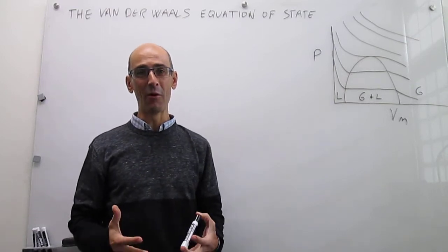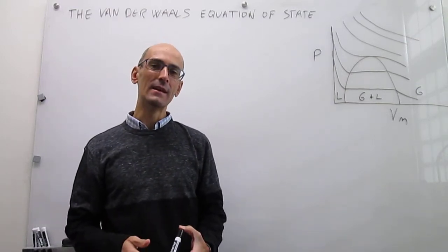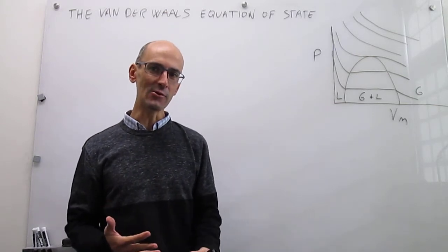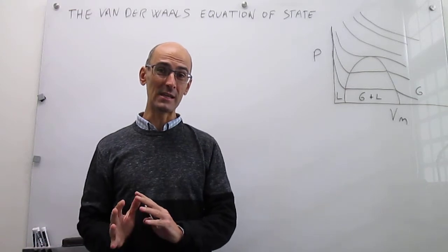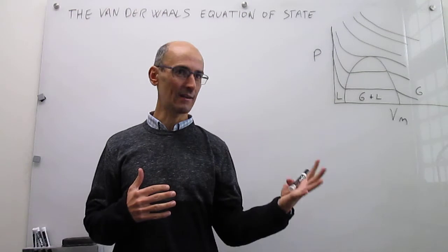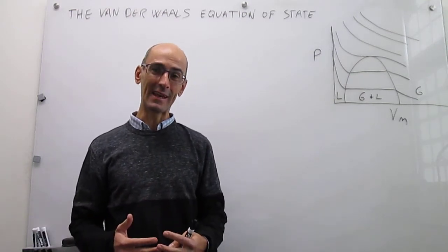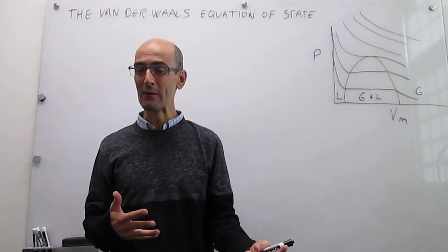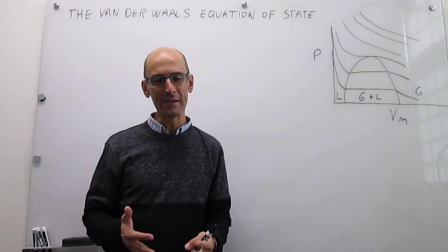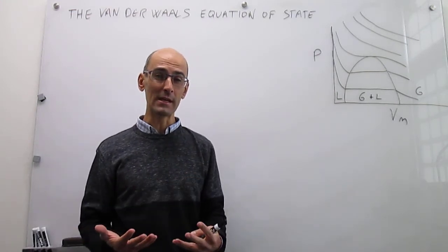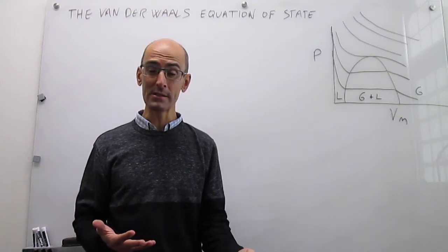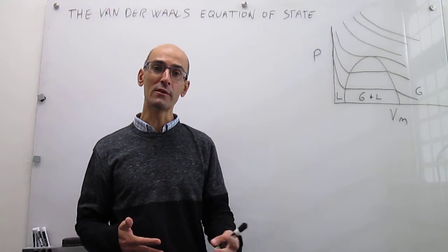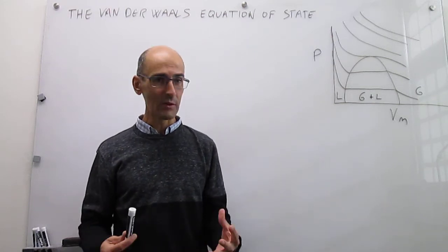In a prior video we saw how the Van der Waals Equation of State came to be. Now it's time to evaluate it and see how good it really is at capturing reality. We know that it tries to capture the attractions and repulsions experienced in a gas, which is much better than the ideal gas equation of state. We'll do this by examining whether it allows for a critical point — meaning condensation — and then evaluate the critical compression factor against experiment.